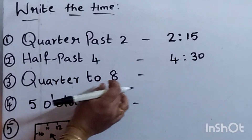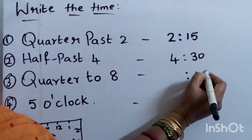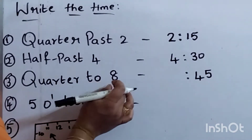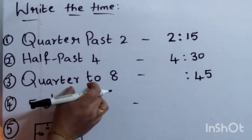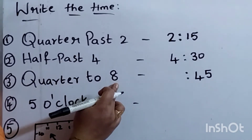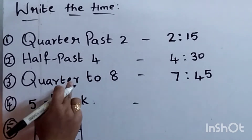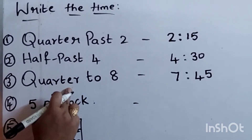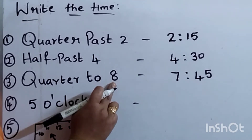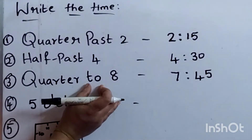Quarter to 8. If it is quarter to, how many minutes? 45 minutes. Quarter to 8 — we have to write the before number of 8, which is 7. It is 7:45, because 8 o'clock still has 15 minutes to go, so the time is now 7:45.